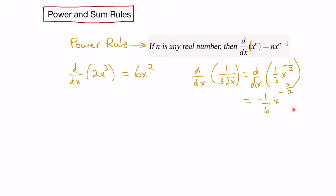Now that's a perfectly satisfactory answer, but if you want to put it back in the form that the question was originally given, we can just rearrange it and get negative 1 over 6 square root x cubed.